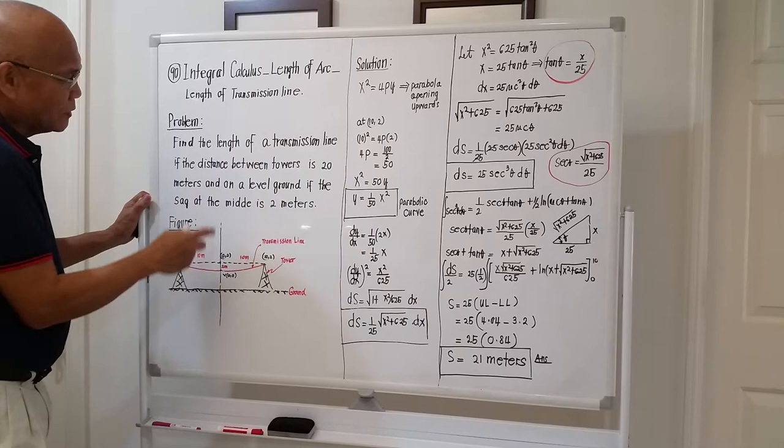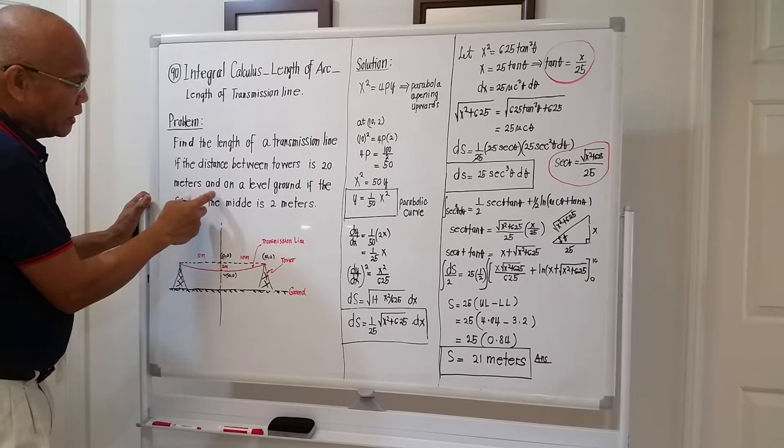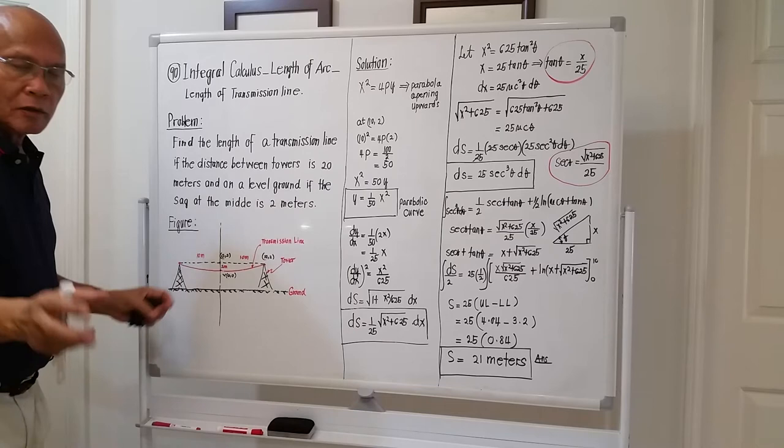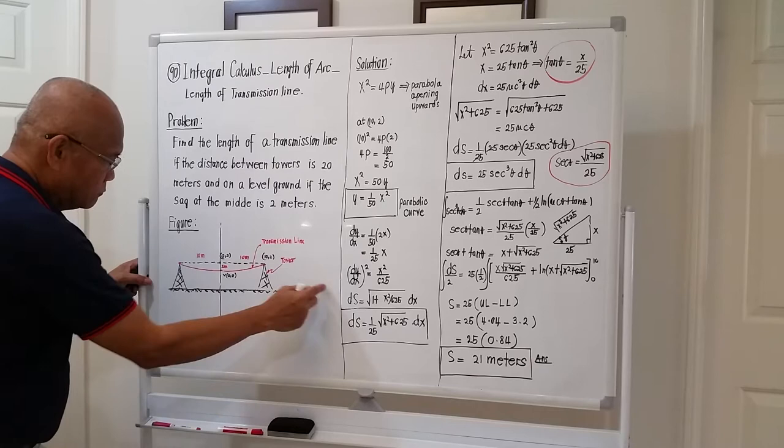Let me read the problem: Find the length of the transmission line if the distance between the towers is 20 meters on a level ground — meaning the transmission towers are on level ground — and if the sag at the middle is 2 meters.